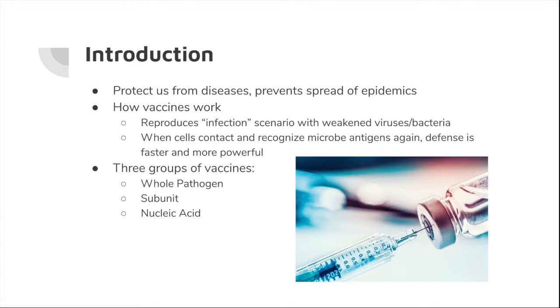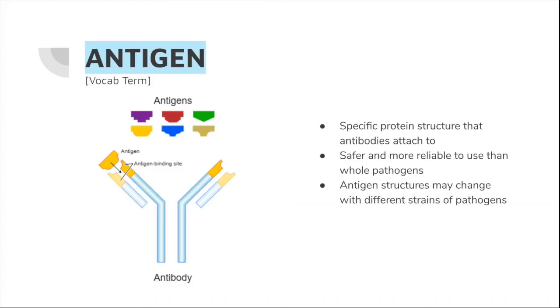Some vaccines, called polyvalent vaccines, can even protect against multiple strains of a pathogen. There are three different groups of vaccines: whole pathogen, subunit, and nucleic acid.